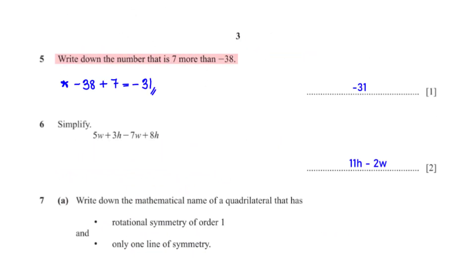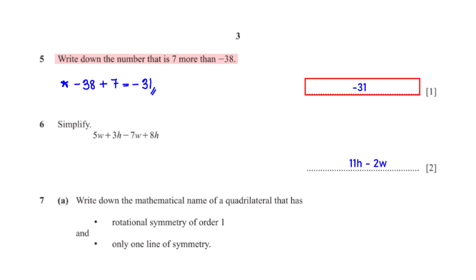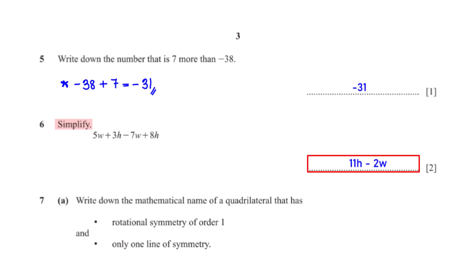Write down the number that is 7 more than negative 38. We add 7 to negative 38, giving us negative 31. Simplify 5w + 3h − 7w + 8h. Grouping like terms: 3h + 8h is 11h, and 5w − 7w is −2w.